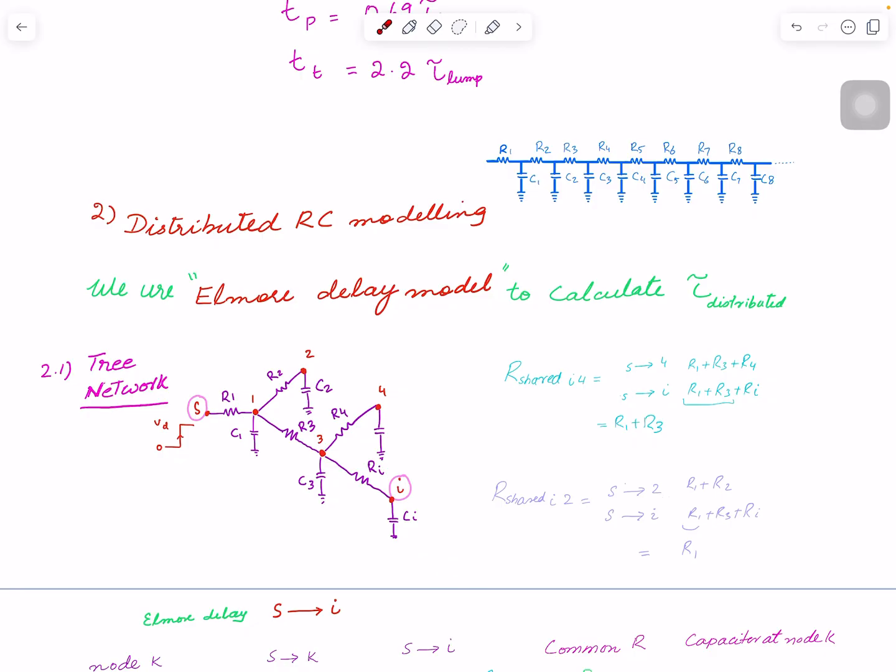But what we use - so the idea is once you have a circuit like this, how will you calculate time constant? We calculated time constant of lumped model. In this case we need to calculate time constant, so we need to find an R and C for that. Elmore delay is a kind of method to give you that.